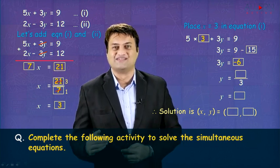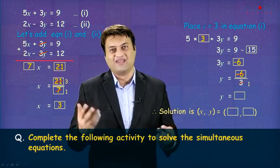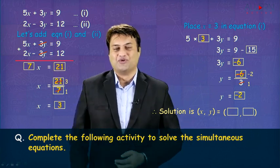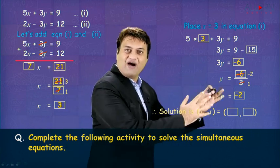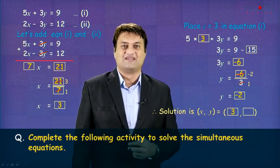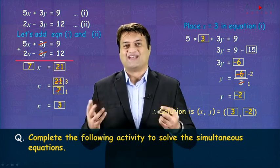So you get y is equal to minus 6 upon 3 and we all know minus 6 upon 3 is minus 2. So you get the value of y as minus 2. So you get x is 3, you get y is minus 2. The solution is x comma y, that's 3 in the first block and minus 2 in the second block. As simple as that.